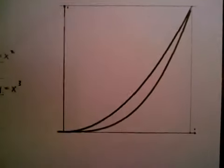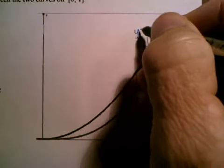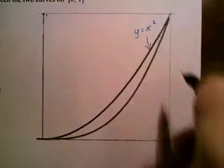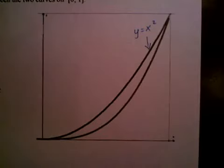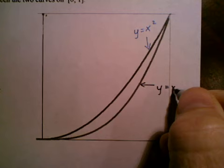Okay, so there you can see that. And the top curve then would be the y equals, if you look over to the left, you can see that the top curve is actually y equals x squared. And the bottom curve is the y equals x cubed.